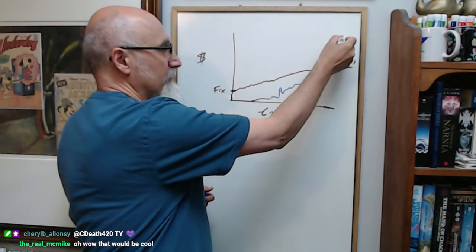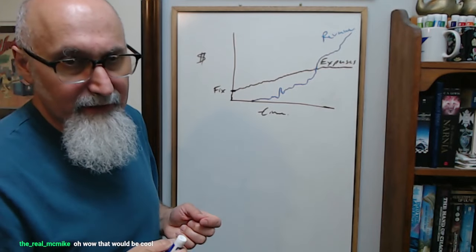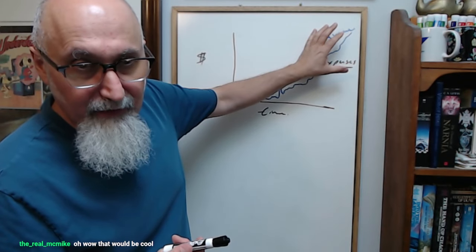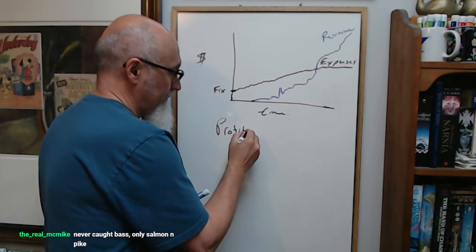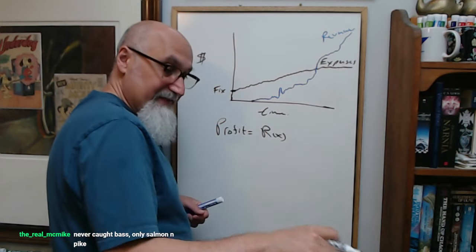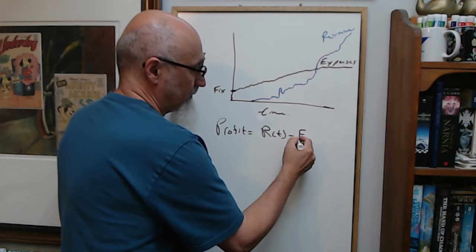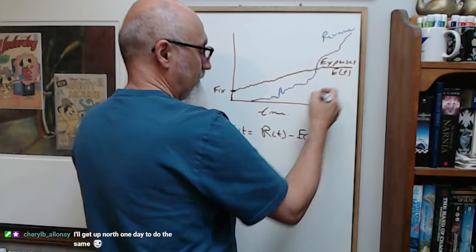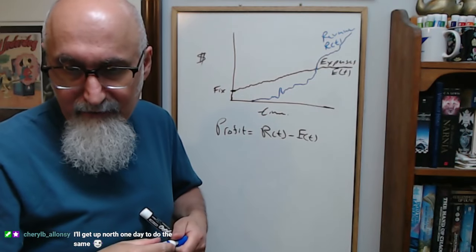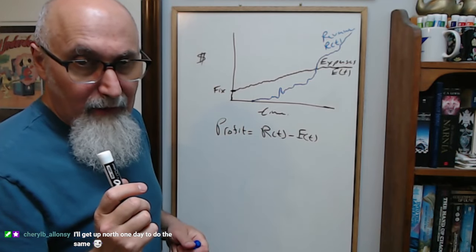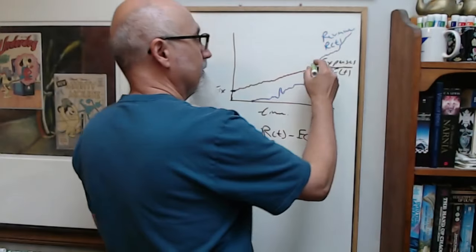This is revenue. The way it works is the difference between your expenses and your revenue is your profit. So profit is equal to R(t) minus expenses E(t). The difference here is your profit, let's put this in green, so this would be your profit.